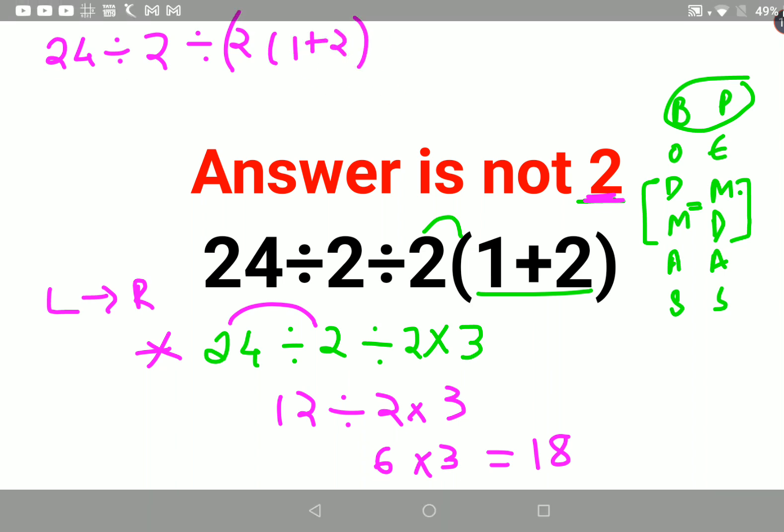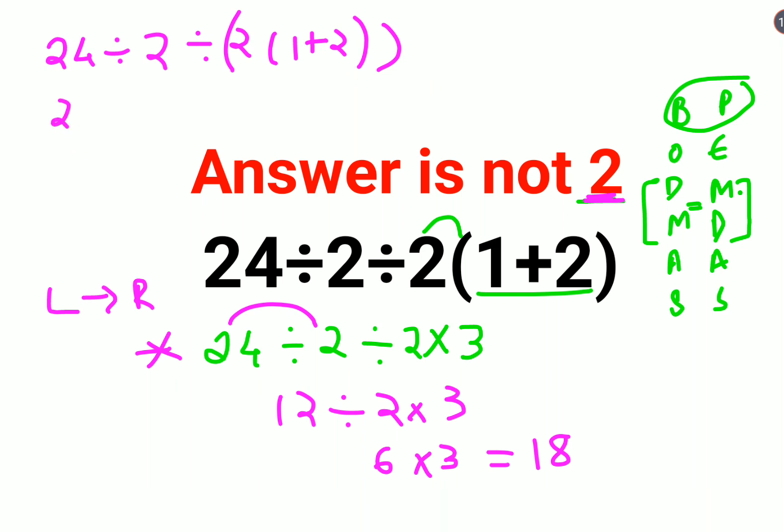That means they want this end multiplication to be done first. So question changes to 24 divided by 2 divided by 2 into 3, that gets you 6. So your 24 divided by 2 gets you 12, divided by 6 gets you 2. And that time the answer comes out to be 2, but for this the answer is 18.